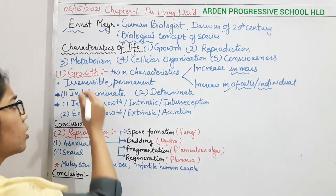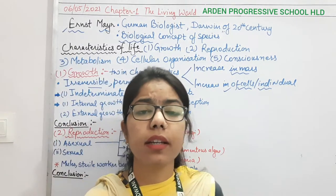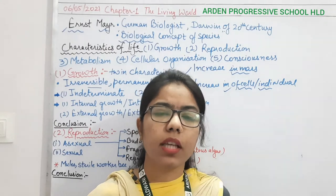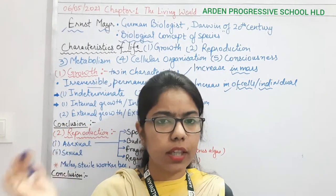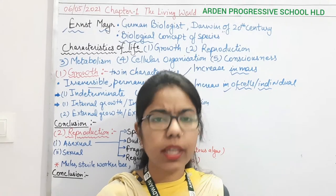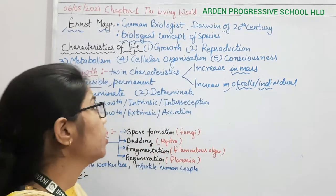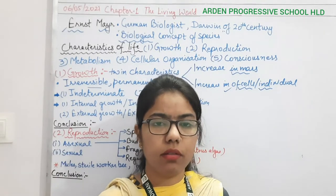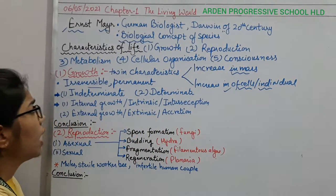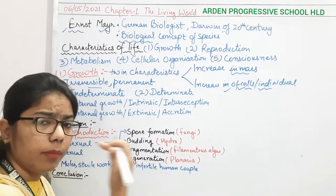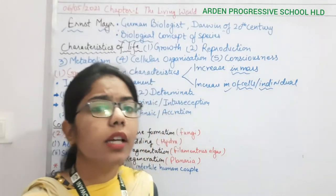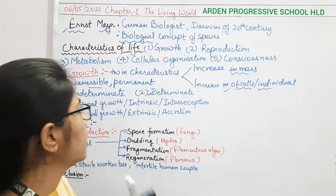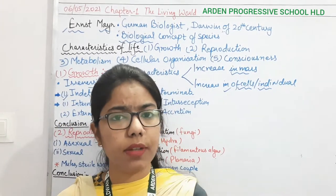Growth should be irreversible and permanent. Irreversible means once it has been achieved, it should not go back. For example, in human beings, once we have grown to a certain size, we cannot reverse the process of growth. Based on this, growth can be classified as indeterminate growth or determinate growth.